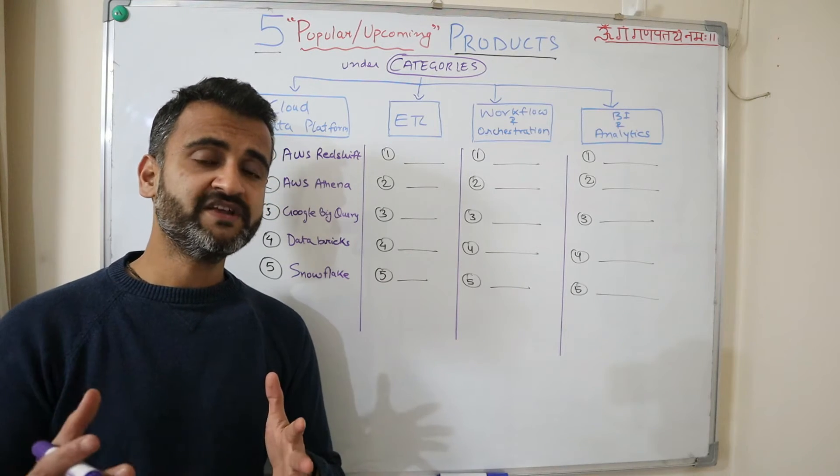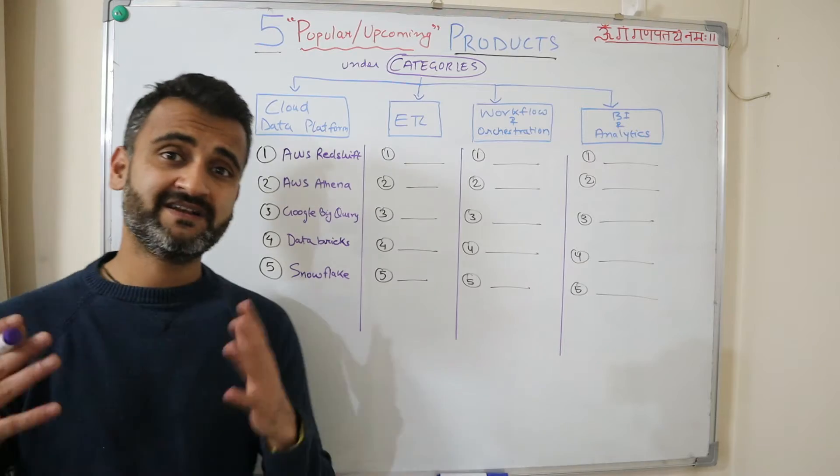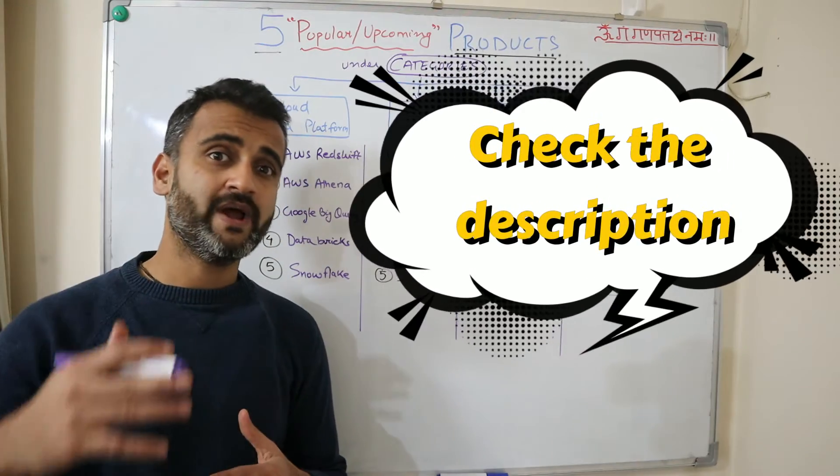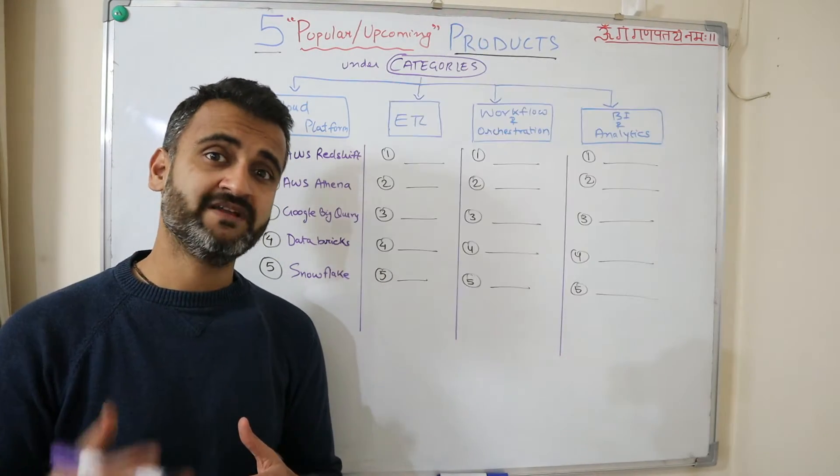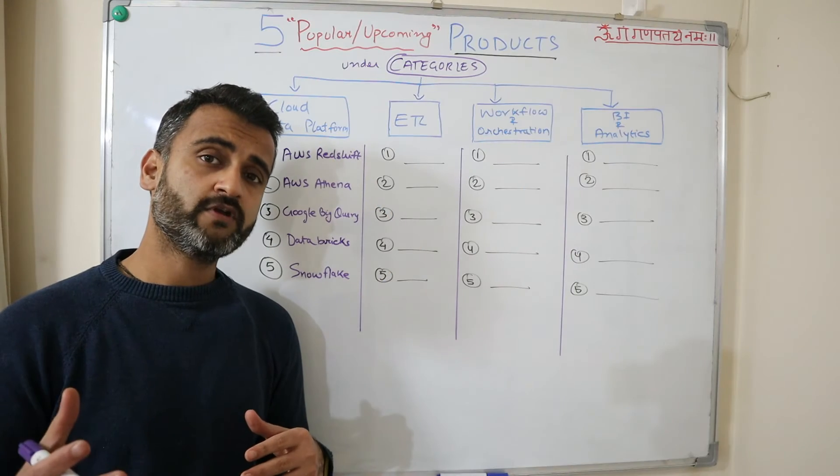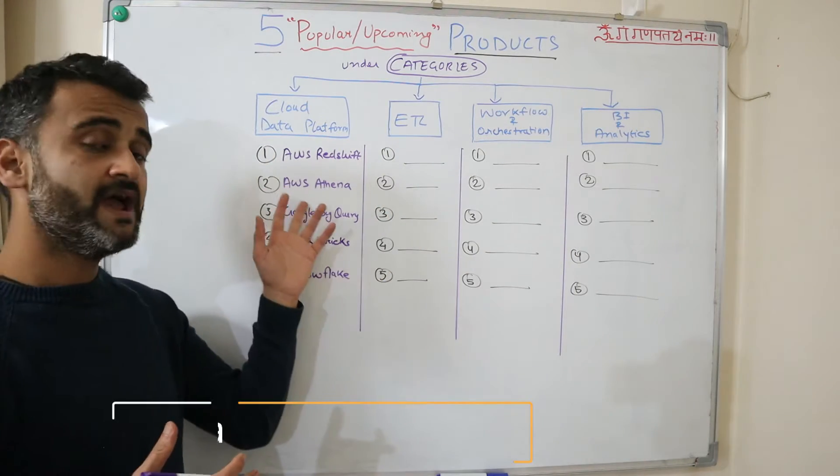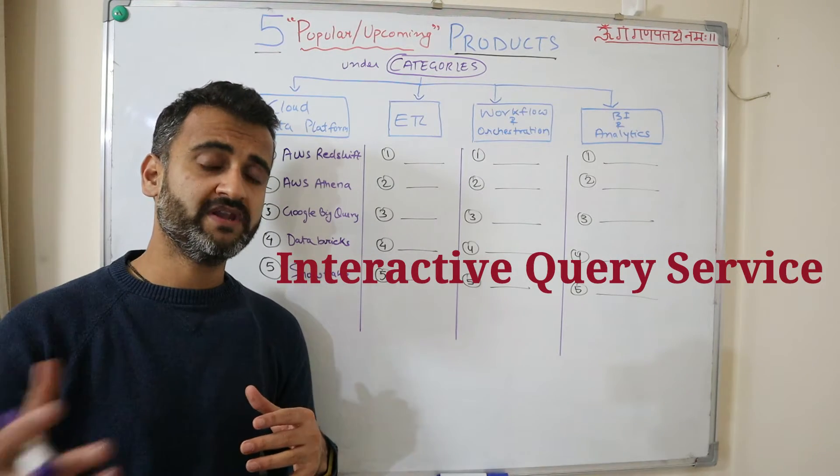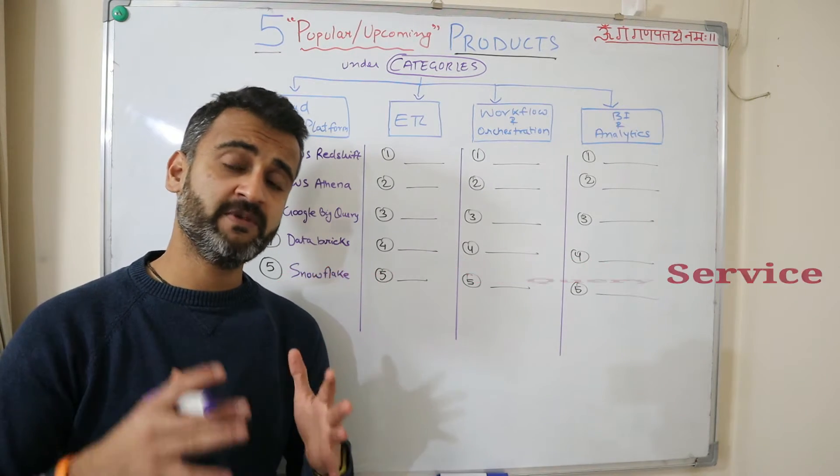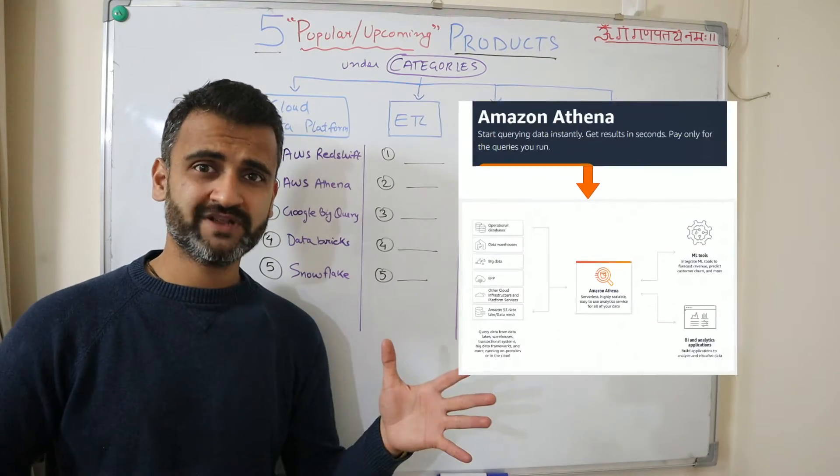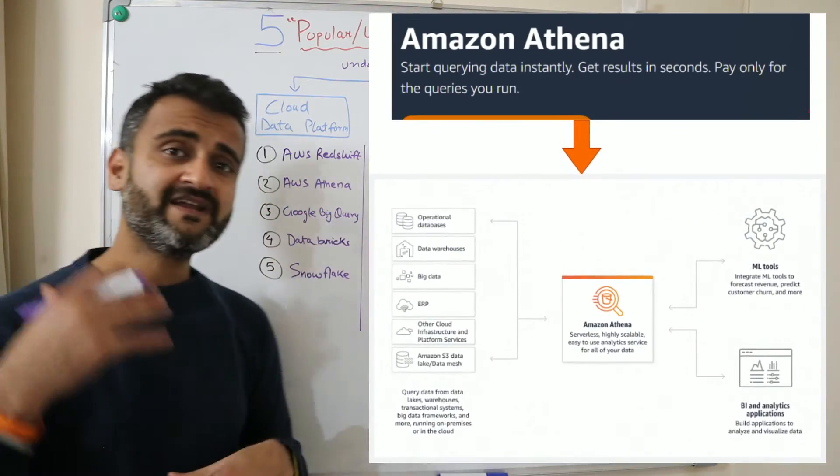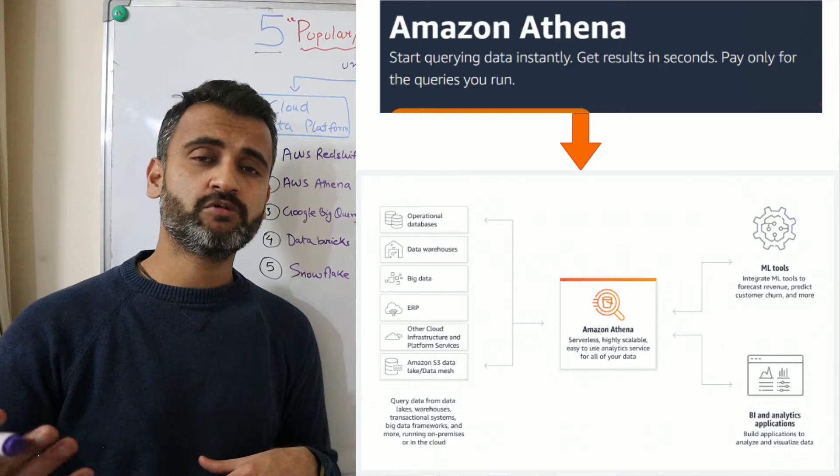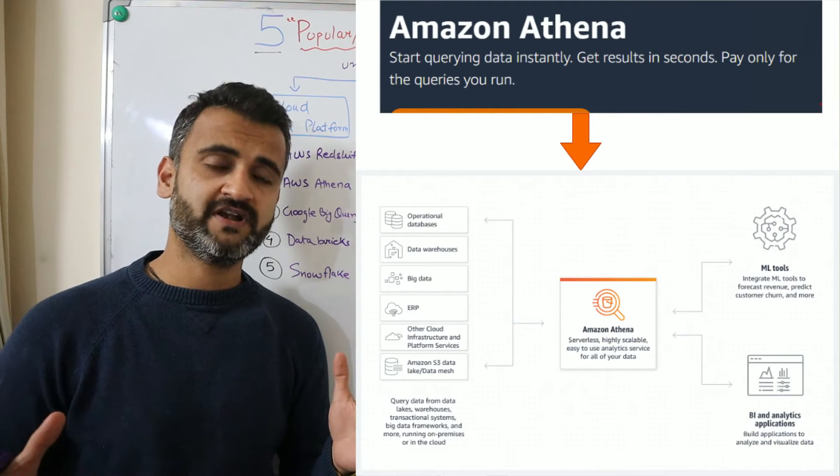I will provide the documentation link for all the products in the description so you can go and check those products in more details. Another upcoming product for AWS is AWS Athena. This particular product is an interactive query service and it can run queries directly on anything stored on Amazon S3 bucket which is a storage service.